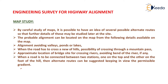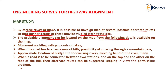The first one is map study. By careful study of maps, it is possible to have an idea of several possible alternate routes so that further details of these may be studied later at the site. The probable alignment can be located on the map from the following details: alignment avoiding valleys, ponds or lakes — known as obstructions — possibility of crossing through a mountain pass when the road has to cross a range of hills, approximate location of bridge sites for crossing rivers, and avoiding bends of the river if any.